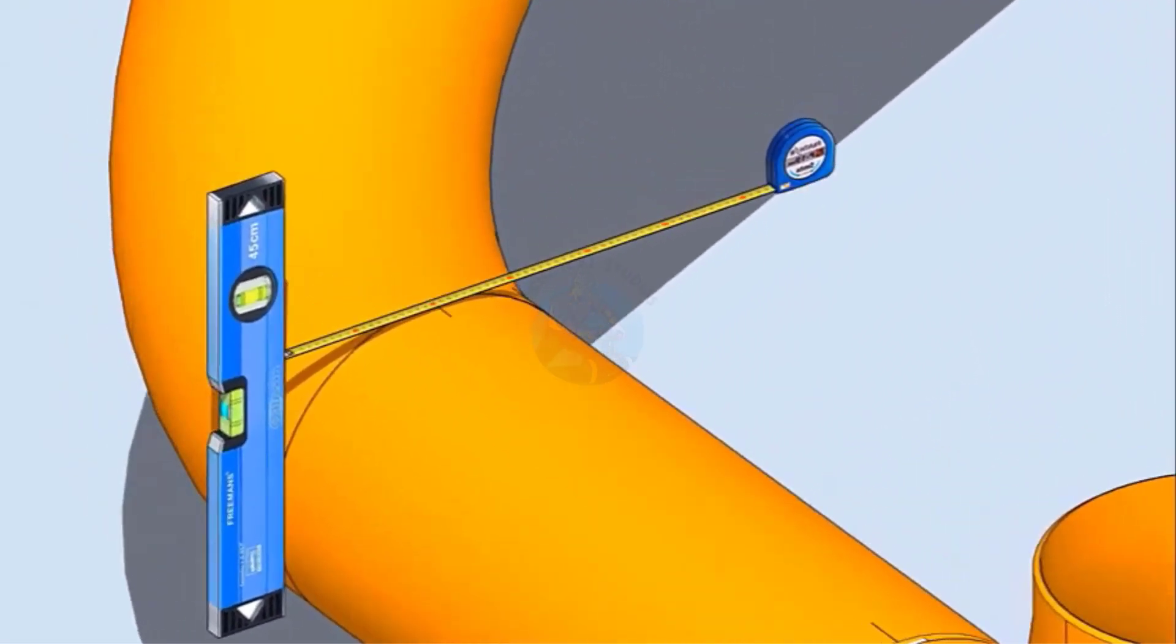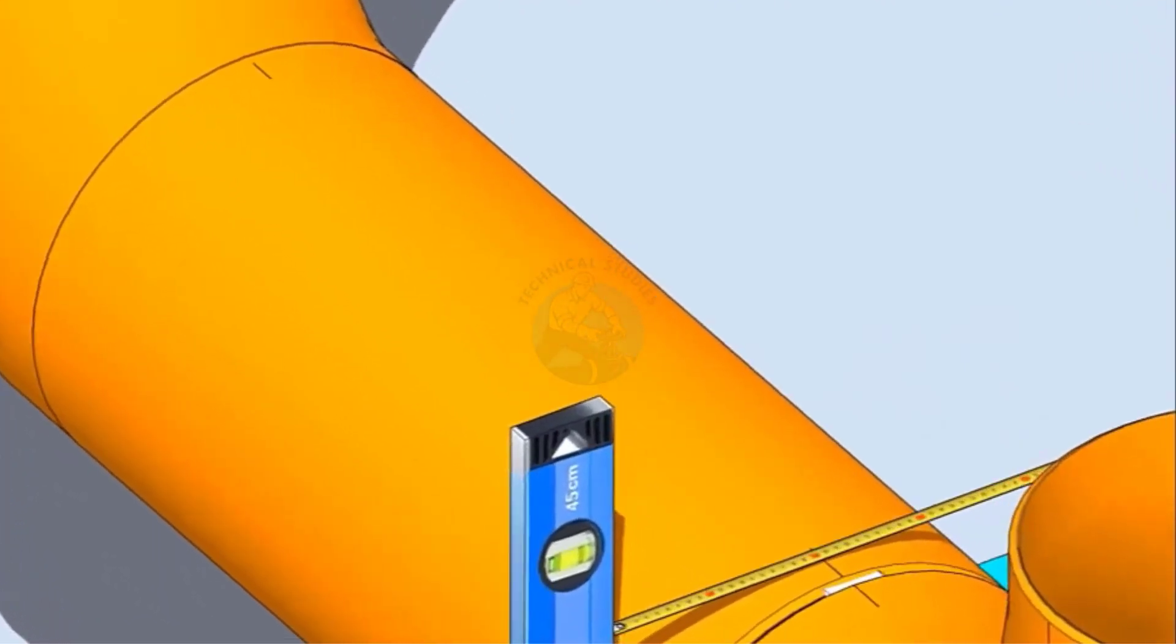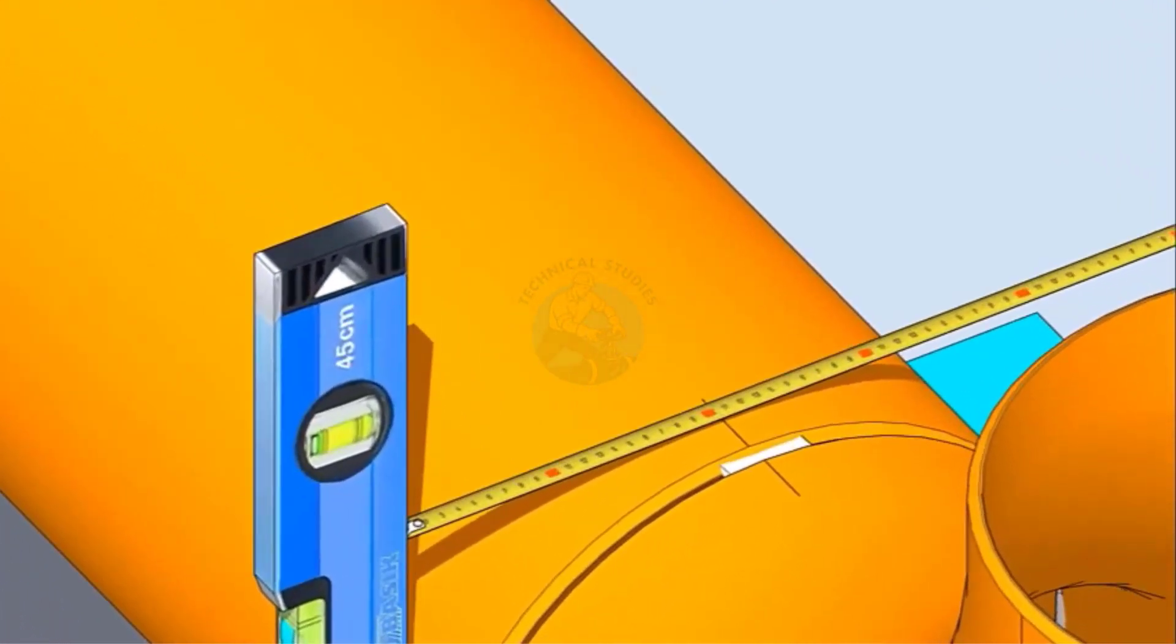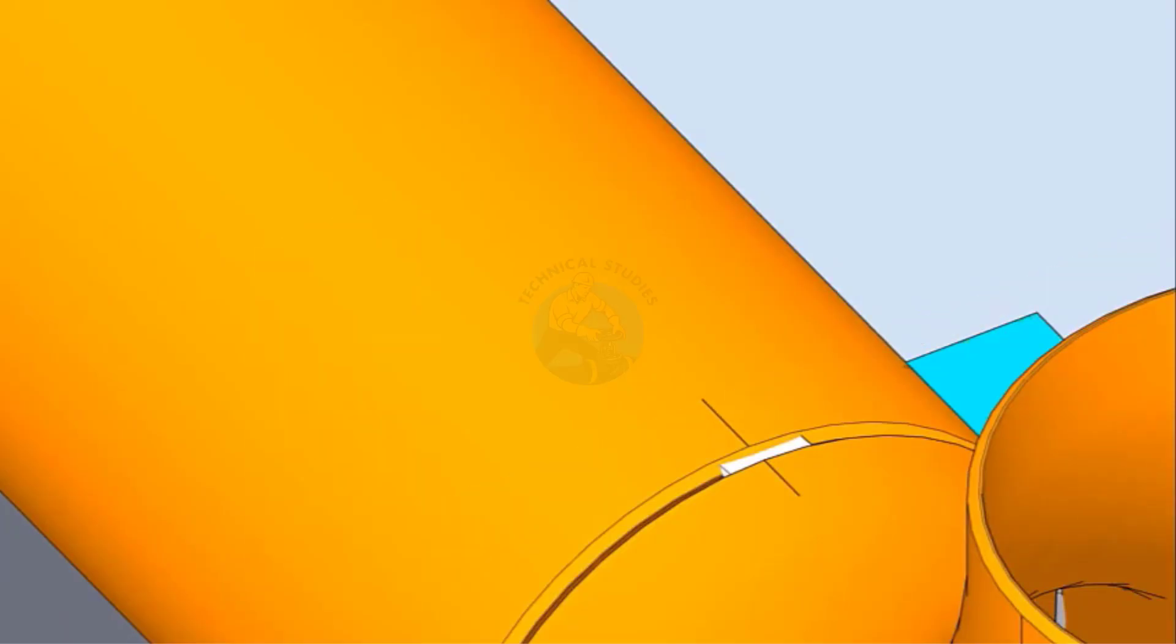Hold a spirit level vertically, touching the side of the pipe, and mark half OD on the top of the pipe. Cross-check this mark from the opposite side also, following the same method.